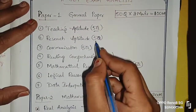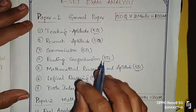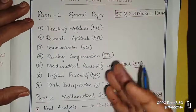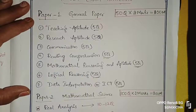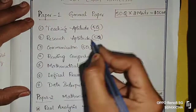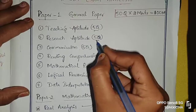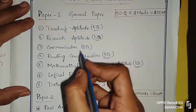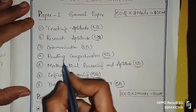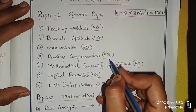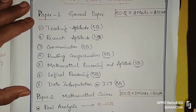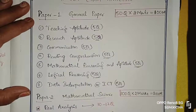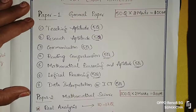Research aptitude will also be there. Especially in the exam, JRF clear and cut off clear. In the research field, these questions will be easy. Communication is also very common. Reading comprehension is also very easy - basically you have passages to attend, which is very easy.